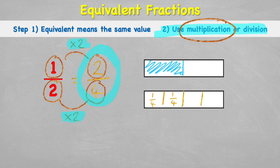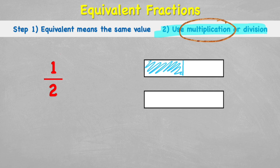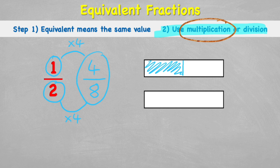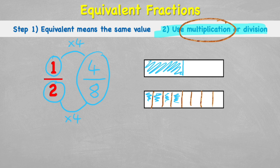Let's try multiplying my two by four: two times four is eight. Whatever I do to the denominator I must do to the numerator, so one times four equals four. So four eighths is my equivalent fraction. I can check that on the chocolate bar by cutting it into eight equal parts — and yes, four of them is equivalent to one half. Good job!